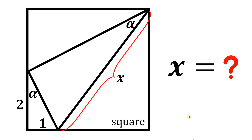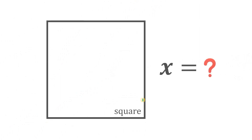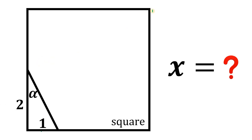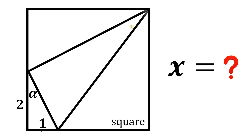Can you solve this geometry challenge? Given this square, let's draw a segment like this. This angle measures alpha, this segment measures one unit, and the other segment is two units. Now from here, let's connect this vertex to this intersection like this.